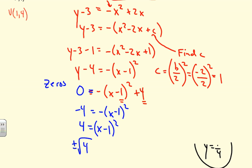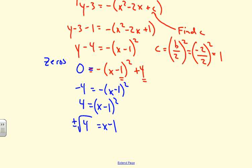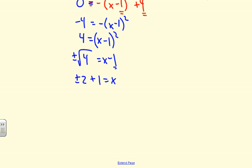Taking the square root of both sides gives plus or minus 2 equals x minus 1. Adding 1 to both sides, x equals 2 plus 1 or x equals negative 2 plus 1, giving us x equals 3 and x equals negative 1 — our two zeros.